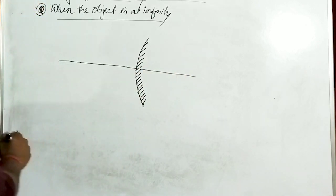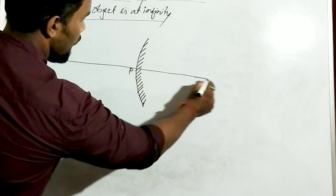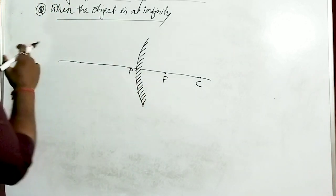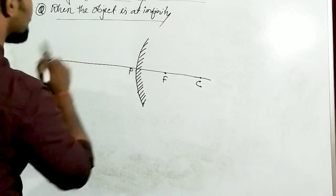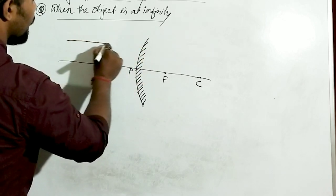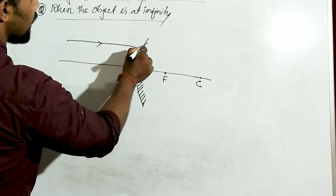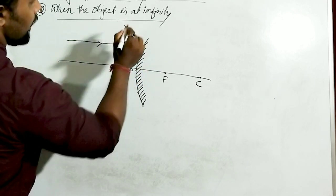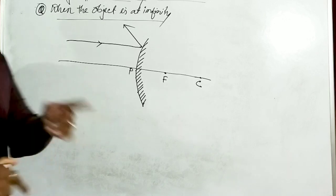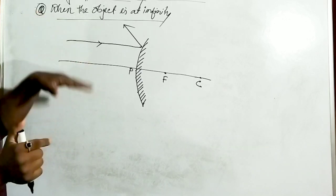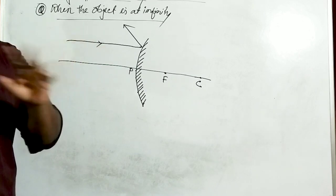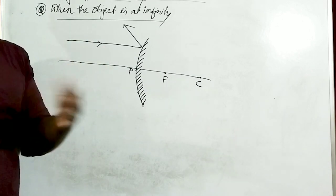I will draw the principal axis — the pole is here, this is the center, and this is the focus. When we discussed representation of images using spherical mirrors, the first property for the convex mirror is: if a ray comes parallel to the principal axis, after getting incident it just gets reflected like that. We consider one more ray because for one incident ray there is only one reflected ray. For this convex mirror, we need two incident rays and two reflected rays — when the two reflected rays meet, that is our image.